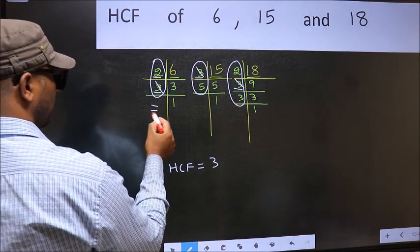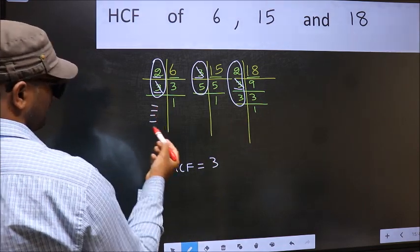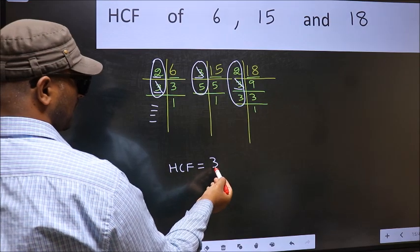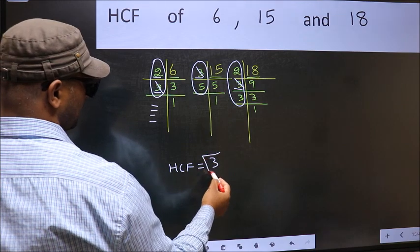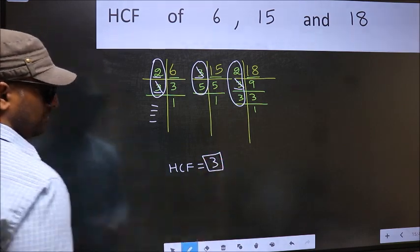No more numbers have been left out. So we got only one number 3 present in all the 3 places. So 3 itself is our HCF.